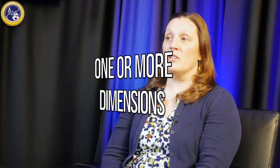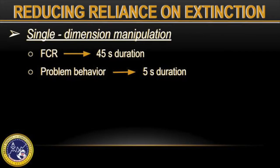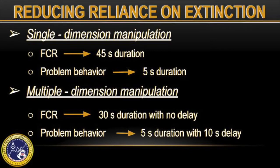As opposed to implementing extinction, one or more dimensions of reinforcement was manipulated such that it favored appropriate behavior. For example, for a single dimension manipulation, FCR produced reinforcement for 45 seconds, while problem behavior produced only 5 seconds. In a multi-dimension manipulation, FCR produced 30-second duration of reinforcement with no delay, whereas problem behavior produced only 5 seconds of reinforcement following a 10-second delay.